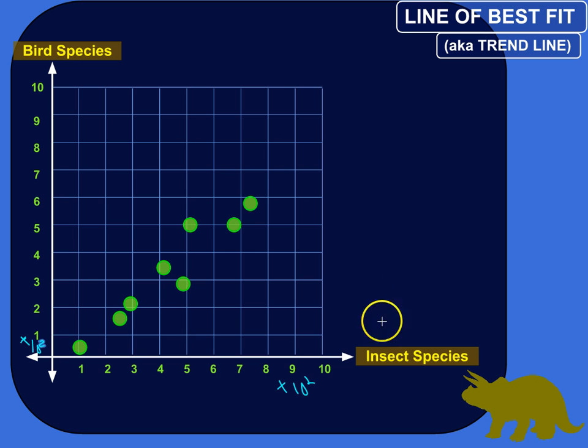So you could hypothesize, the greater variety of insects there are on an island, the greater variety of bird species that the island can support. So I'm interested in seeing if there's a relationship there.